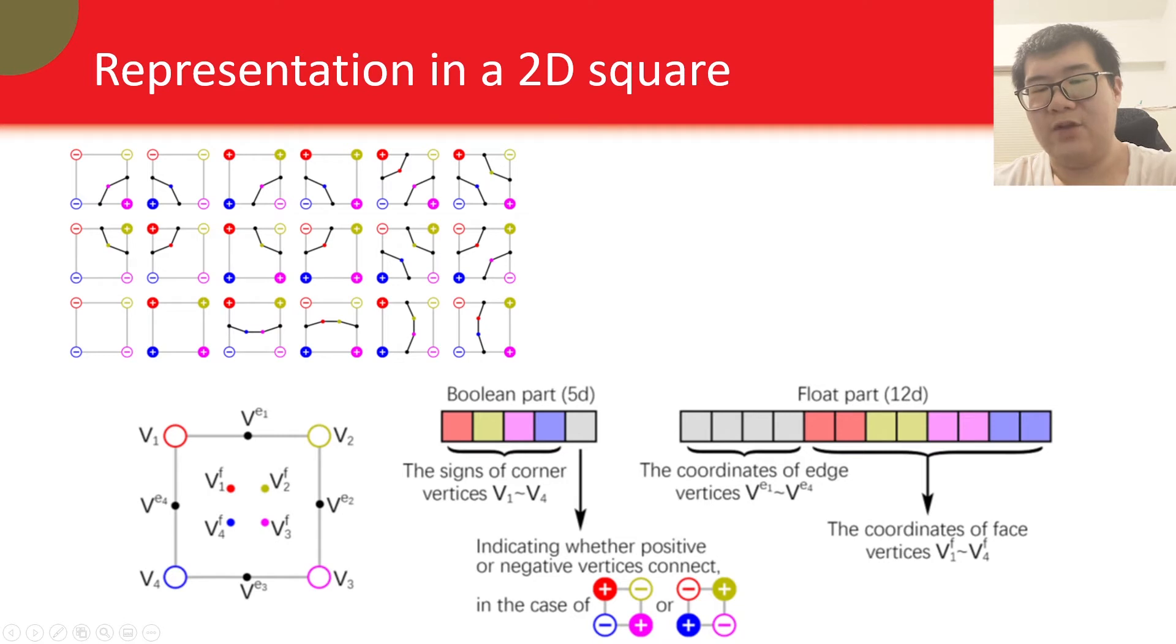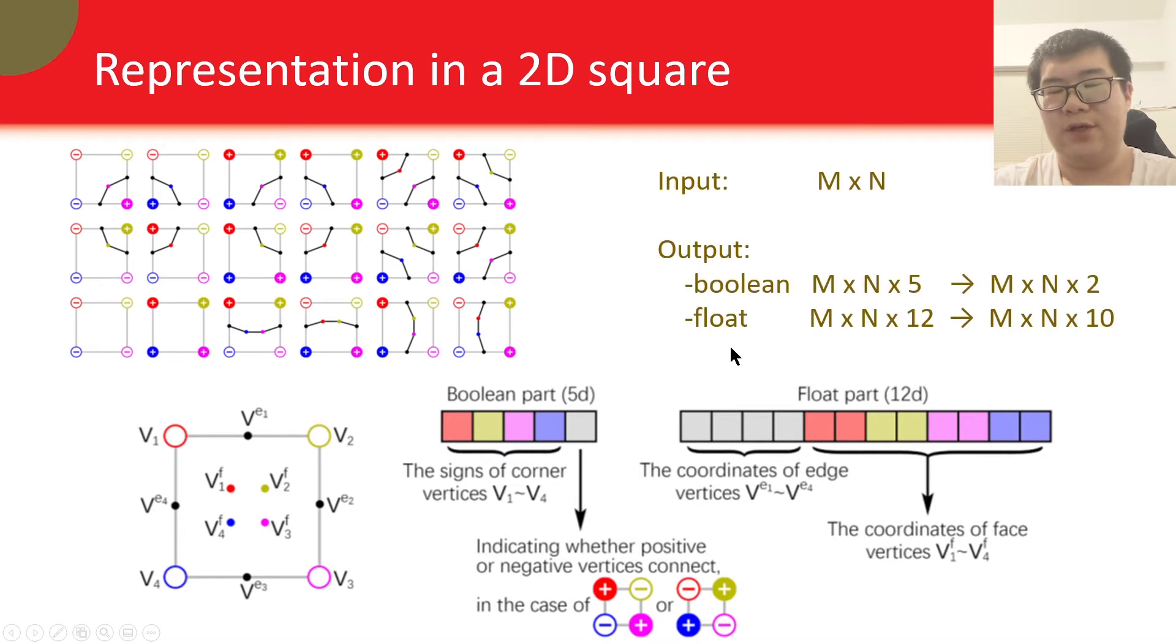Now let's look at the float part, which is used to store vertex positions. The edge vertices have one degree of freedom, so four float numbers for four edge vertices. The face vertices have two degrees of freedom, so eight float numbers for four face vertices. In total, we need five binary values and twelve float numbers to store a square.